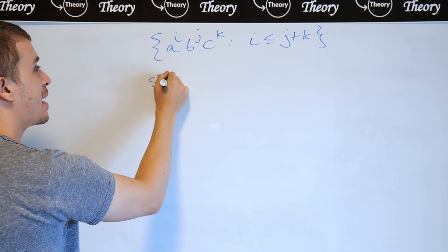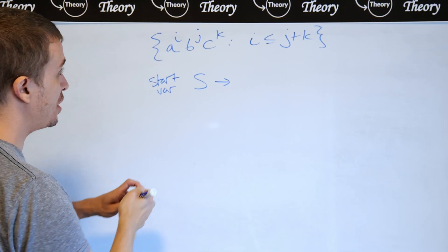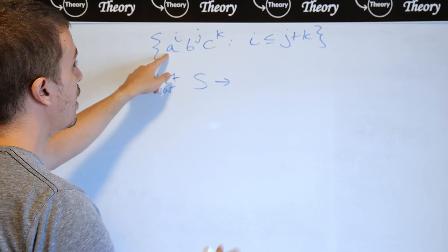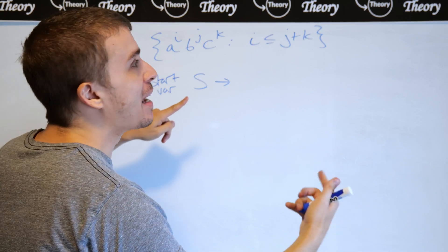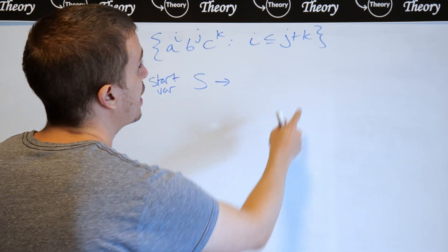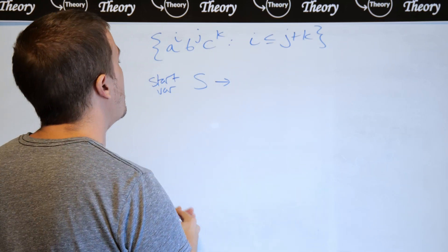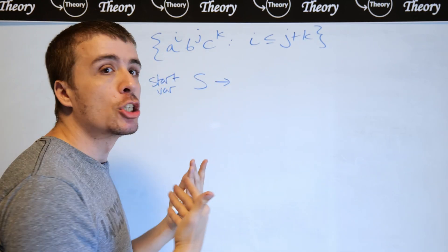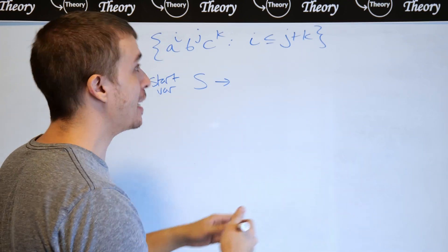So what I'm going to do is I'm going to make a start variable right here called S. And so since the As appear at the beginning, that means that we've got to match them up with the Cs and then potentially make more Cs as we need to, because we could have more because this says less than or equal to. And then once we're done, we've got to match up the As and Bs together later, and then potentially make more Bs there too.